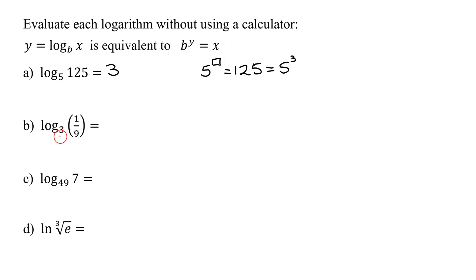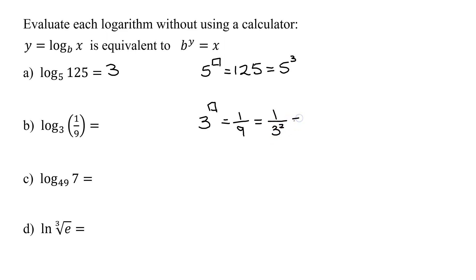Looking at the second example, we need to ask ourselves: base 3 raised to what power is going to give us 1/9? Well, 1/9 is 1 over 9, which is 1 over 3 squared. To get the 3 up into the numerator, we use a negative exponent: 1 over 3 squared equals 3 raised to the negative 2. So log to the base 3 of 1/9 is negative 2. Check: is 3 raised to the negative 2 power equal to 1/9? Yes.